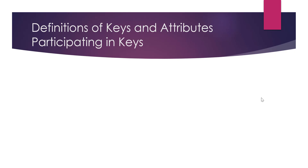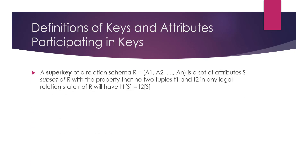Let's review some definitions about keys since we are going to use these keys in our normalization process. If we have a relation R that has a set of attributes a1, a2, up to aN, a superkey in that relation is a subset of that relation — an attribute or more — where no two tuples have the same value for that subset. So if the superkey is a1, tuple1 and tuple2 cannot have the same value of a1. If the superkey is a1 and a2, tuple1 and tuple2 cannot have the combined subset a1 and a2 equal for both of them.